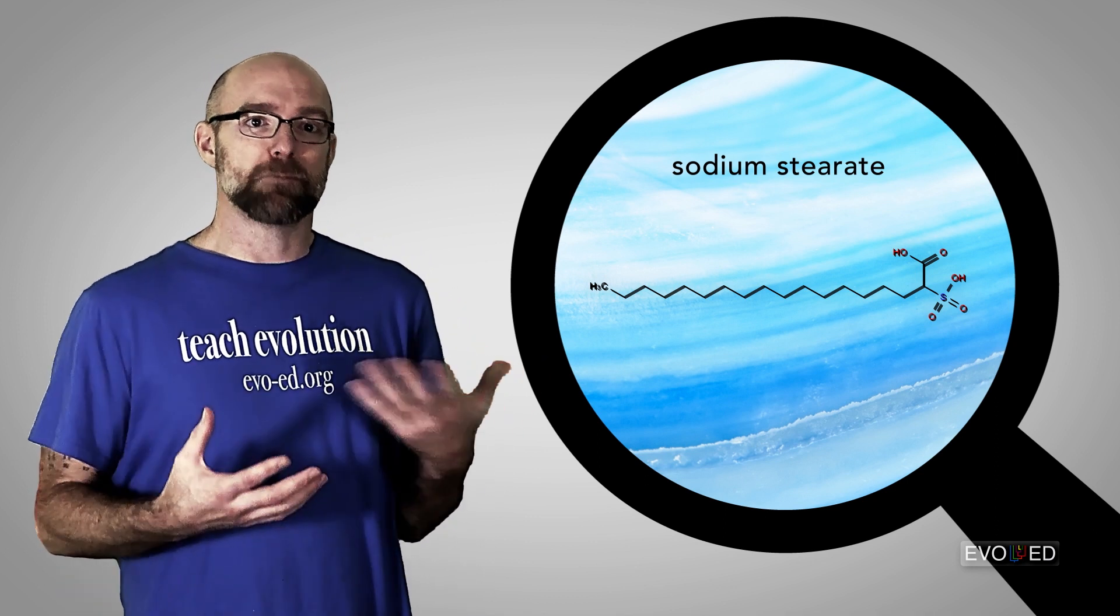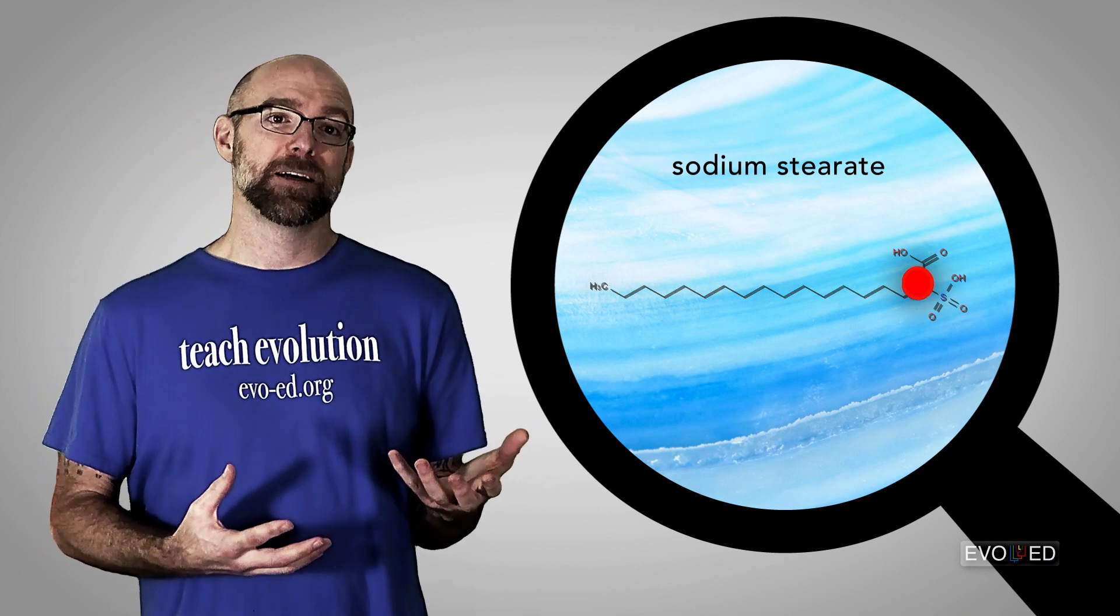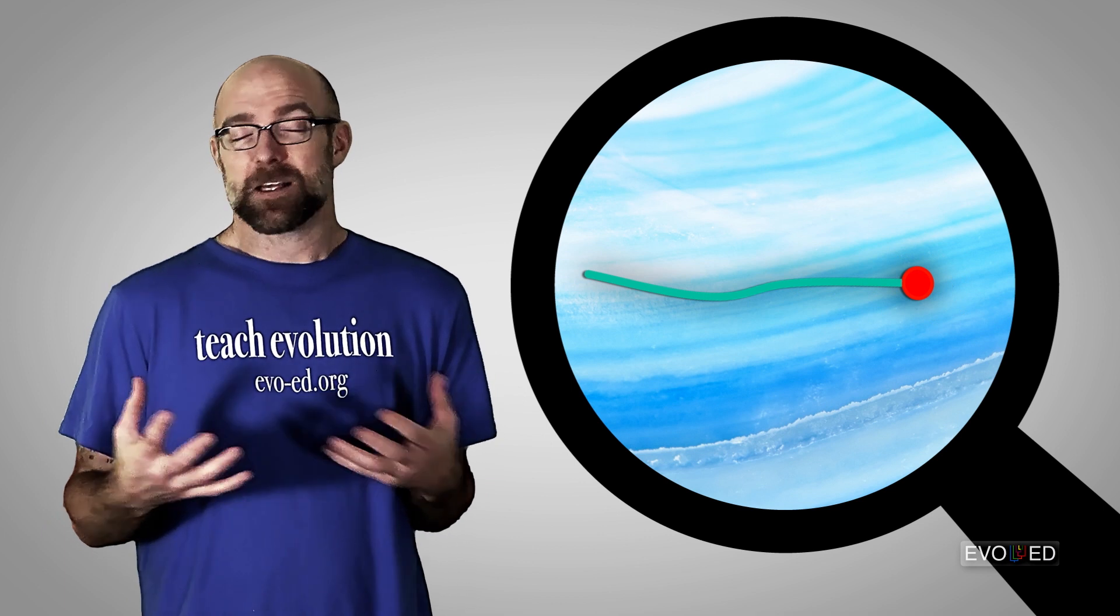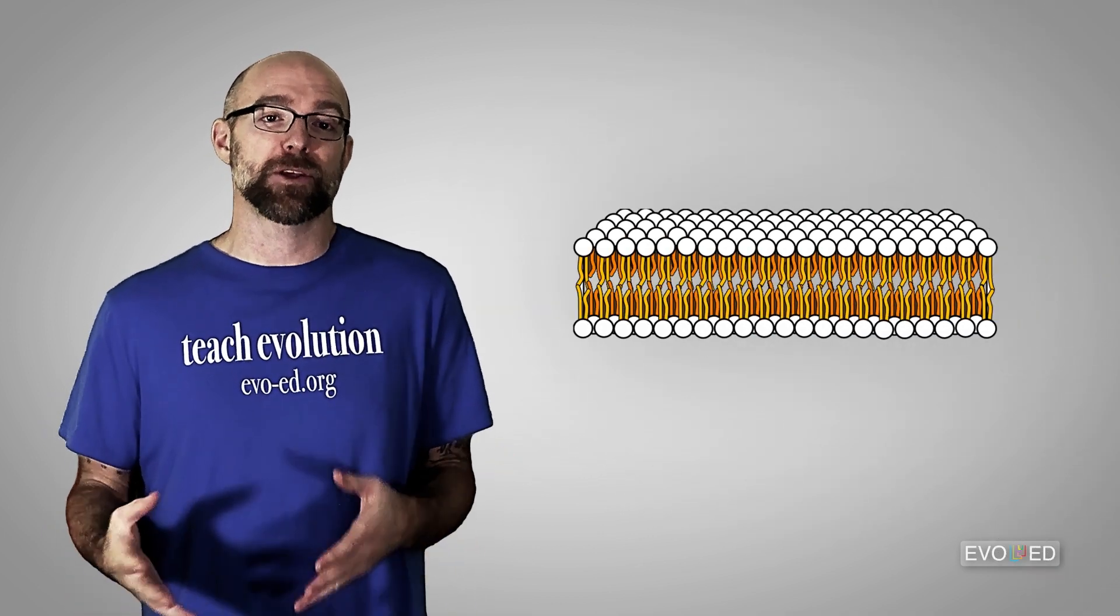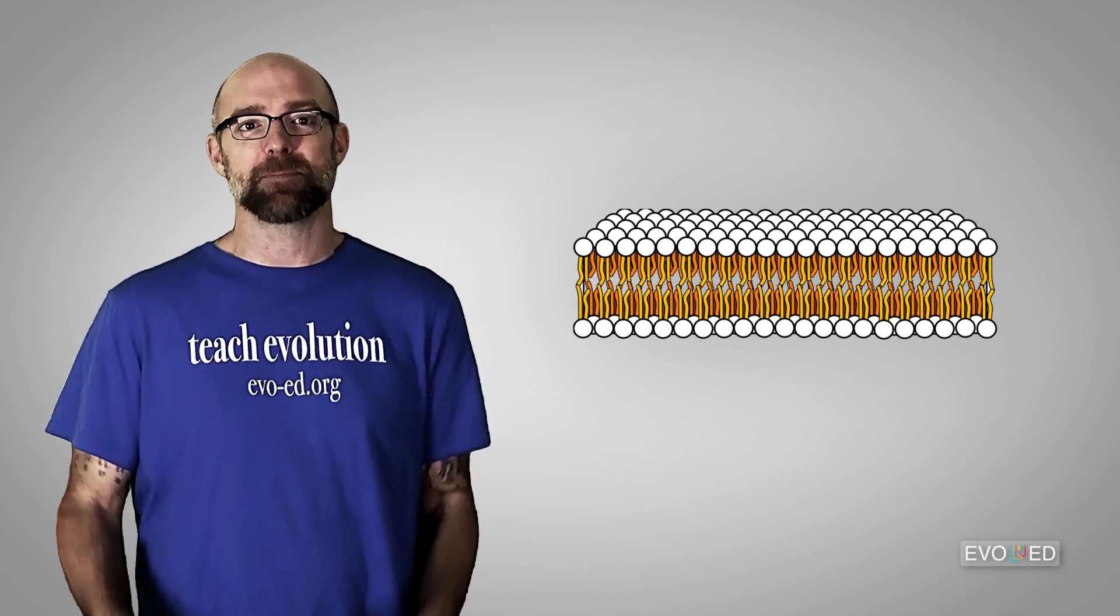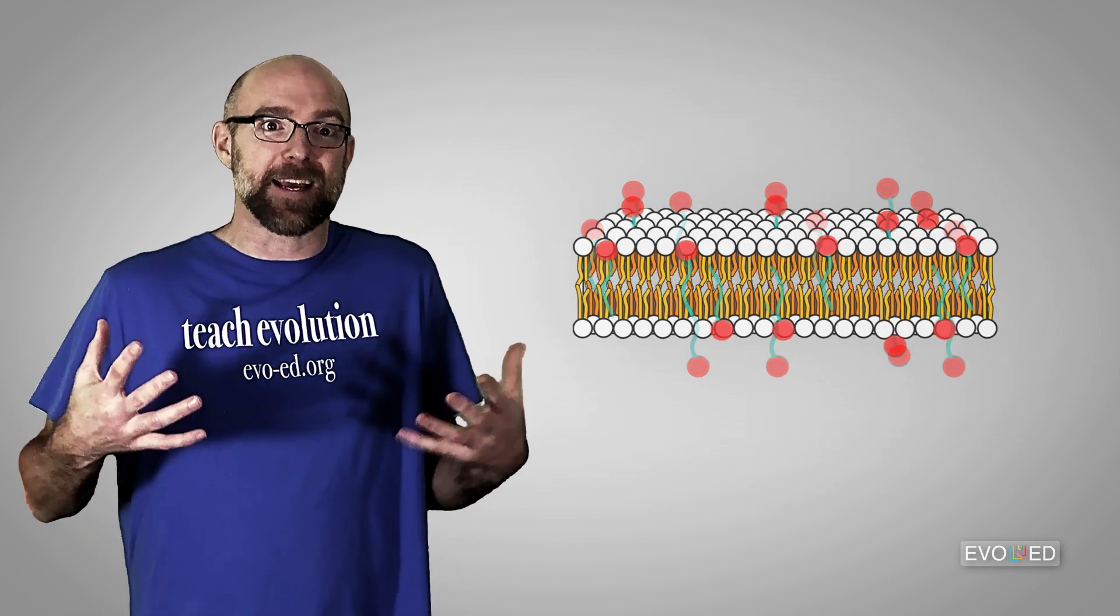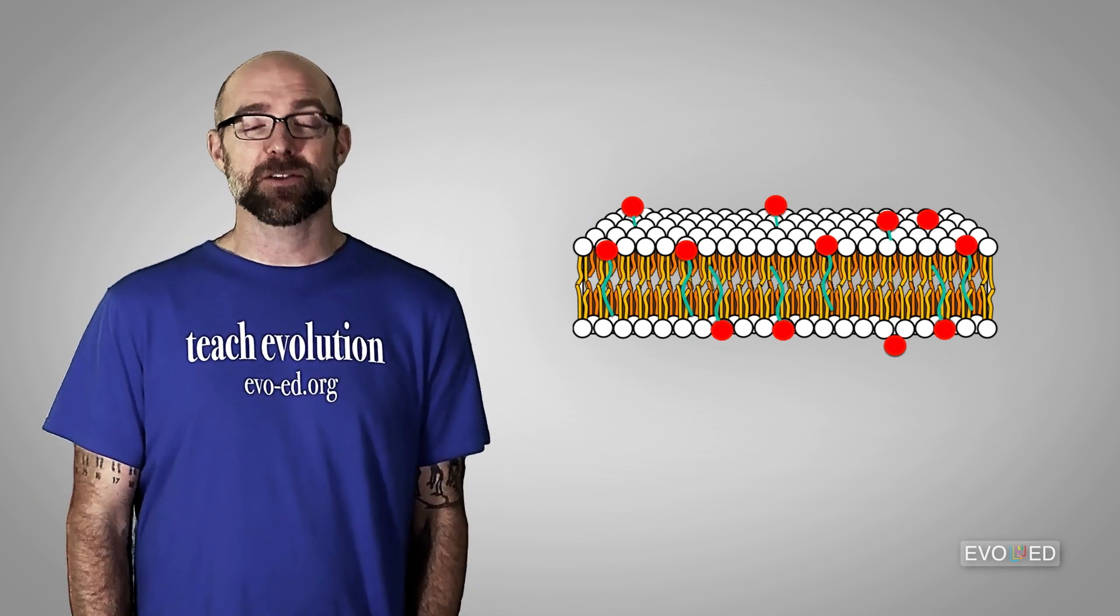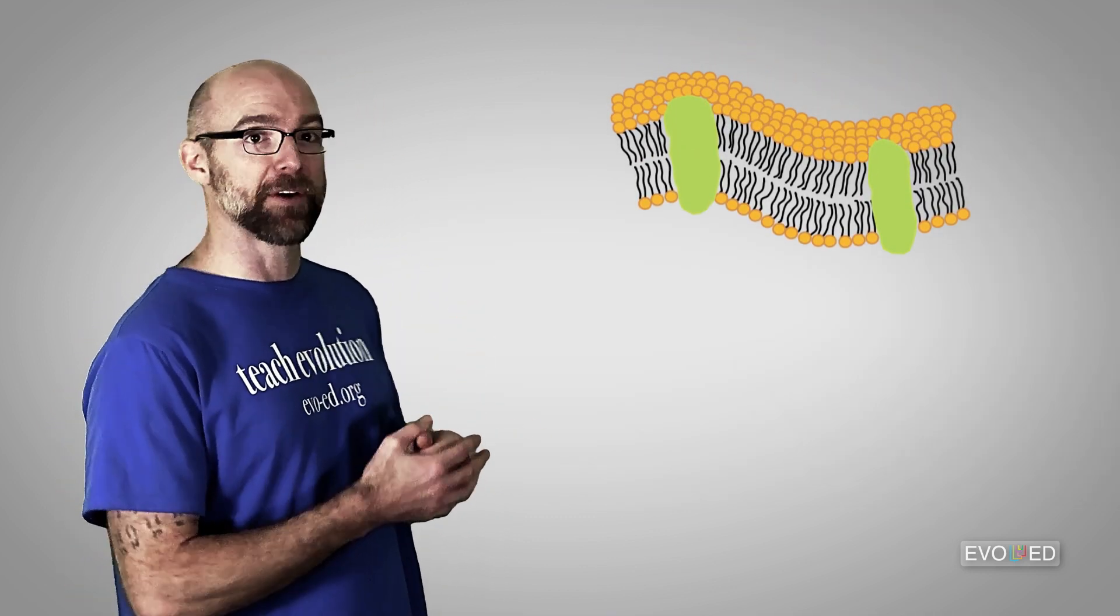Structurally, this soap molecule, this sodium stearate, has a hydrophilic head group and a hydrophobic tail. This makes it really similar to those phospholipid molecules that I was showing you earlier. Those are the molecules that make up a cell membrane. The sodium stearate can essentially integrate itself in between those phospholipids to disrupt the membrane's structural integrity. Let's take a look at another view of it.